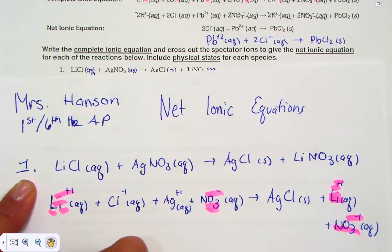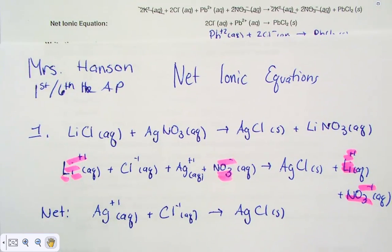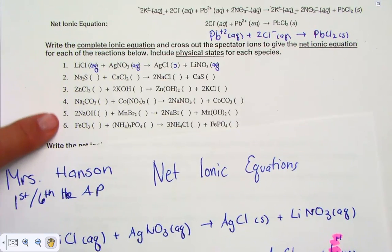Writing out the net ionic equation, write the positive first: Aqueous ion of silver with an aqueous ion of chloride forming solid silver chloride. This is a pattern that we'll continue for the remaining examples.